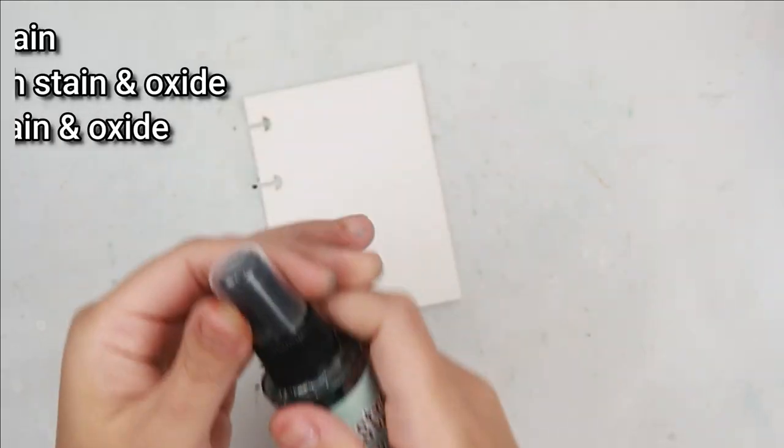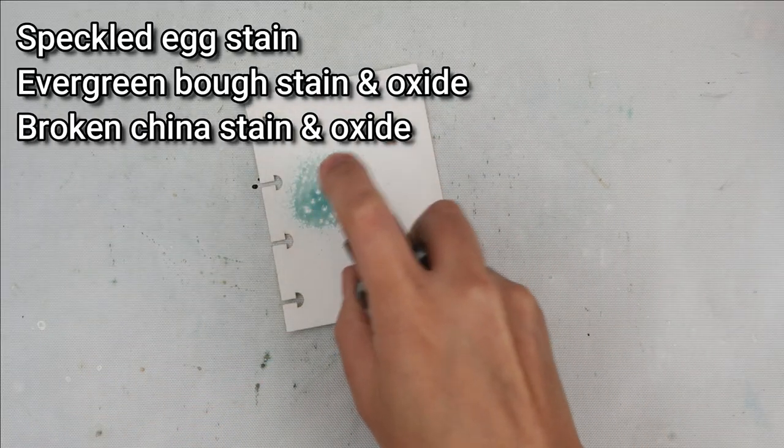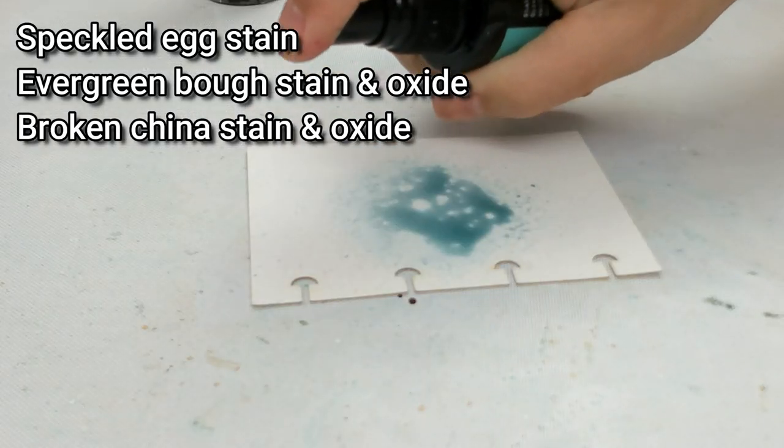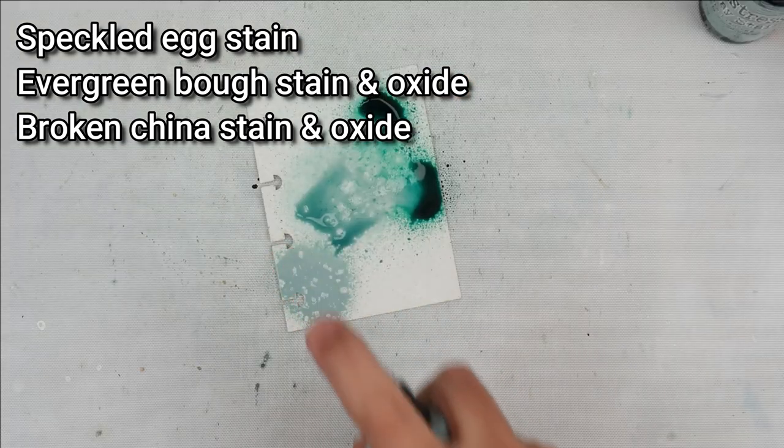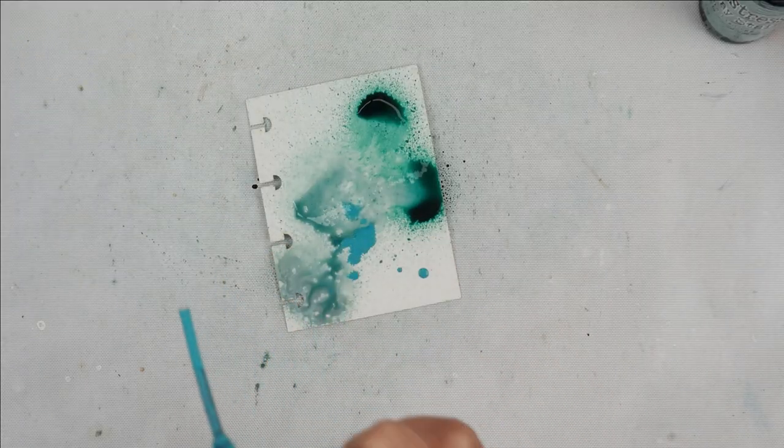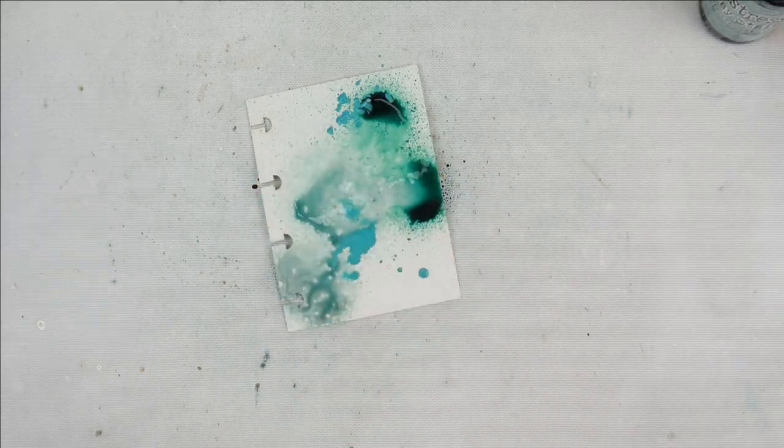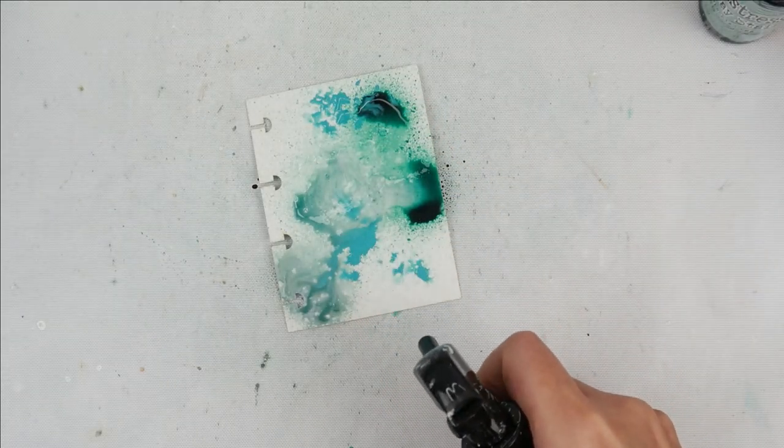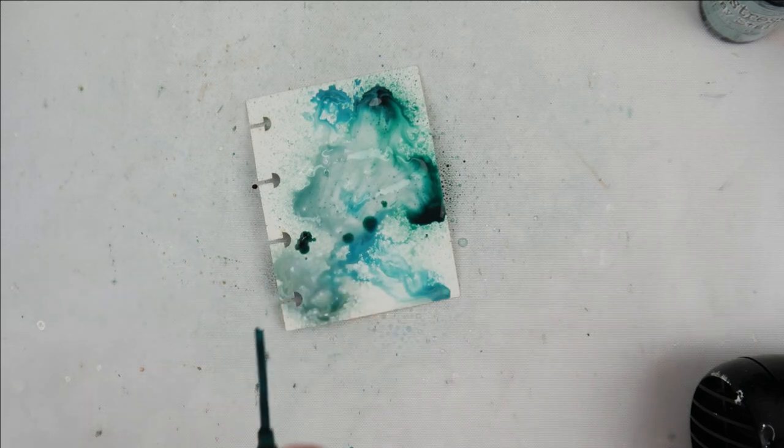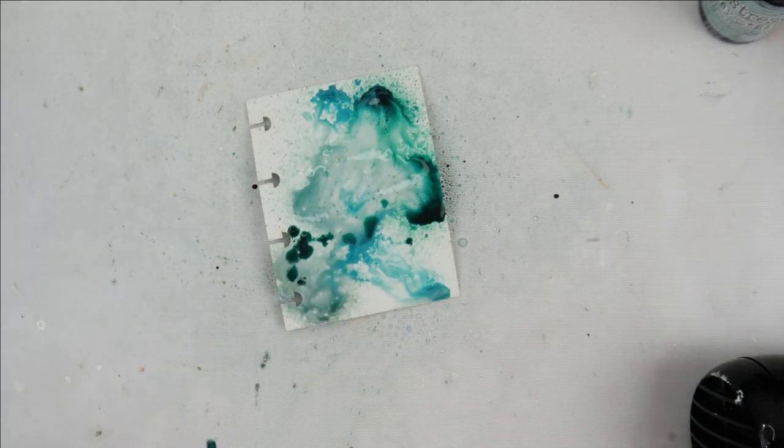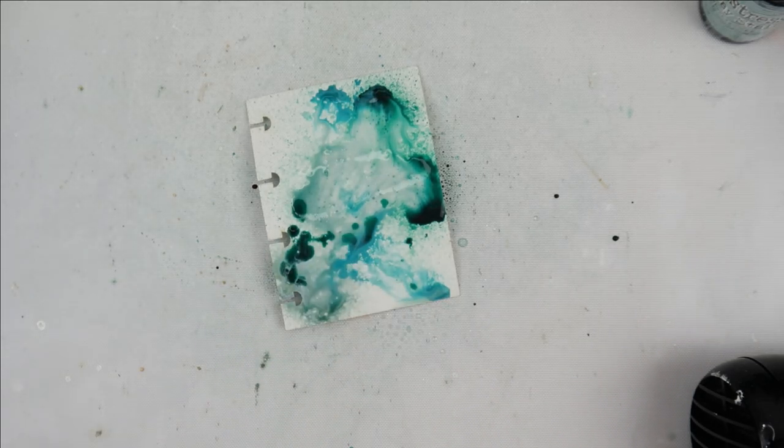For this next combination I am starting out with some Speckled Egg Spray Stain. I told you guys it was my favorite. I'm going in with some Broken China Spray Stain and then I even add some Speckled Egg Distress Oxide Spray in the corner there. I add a little bit of water to help everything kind of flow and mix together really nicely.